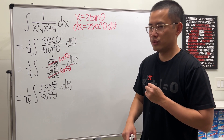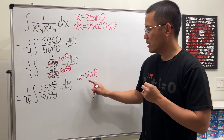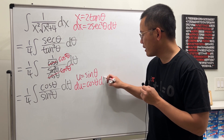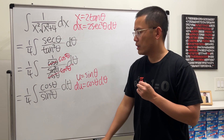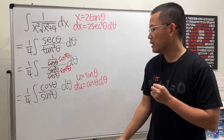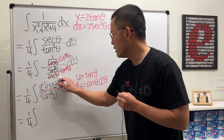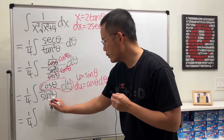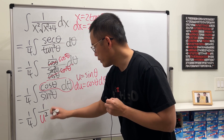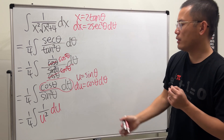This is easier because now we can do a regular u-substitution. The derivative of sine theta is cosine theta dθ, which is exactly what we have on top. Let u equal sine theta (to the first power, not the second). The integral becomes (1/4) times the integral of du over u squared, or equivalently u to the negative 2. We've now used both trig substitution and u-substitution.